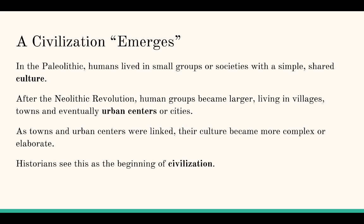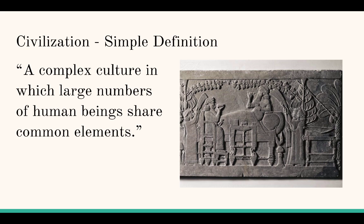Historians say that's where civilization begins — as those urban centers and towns link. Your book defines civilization simply: it's a complex culture in which large numbers of human beings share common elements. You have to have complexity, a high population, and shared common elements, which are sometimes called the characteristics of civilization.